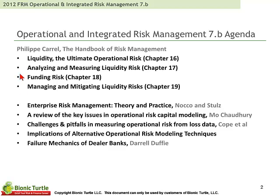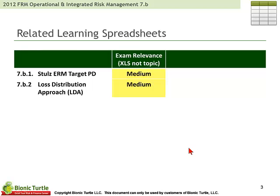We continue in sequence according to the study guide and four brief chapters from the new textbook assigned in 2012 by Philip Carell, the Handbook of Risk Management, and then five readings that reappear from prior years: enterprise risk management, a review of key issues in operational risk capital modeling, challenges and pitfalls in operational risk, implications of all operational risk modeling techniques, and the failure mechanics of dealer banks, which was reclassified from current issues to an operational risk topic.